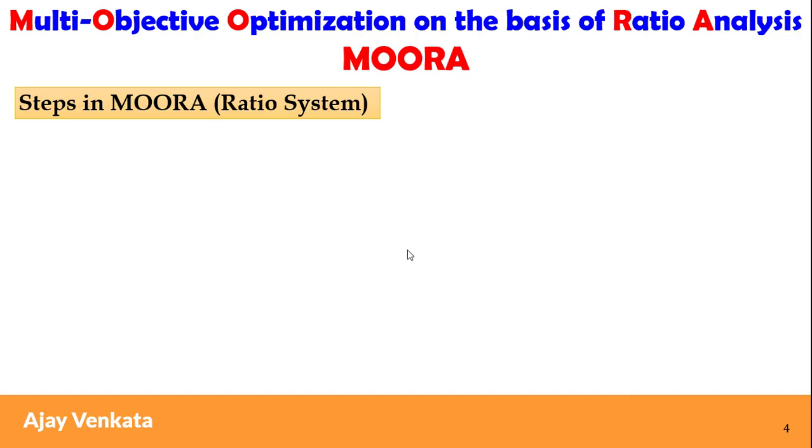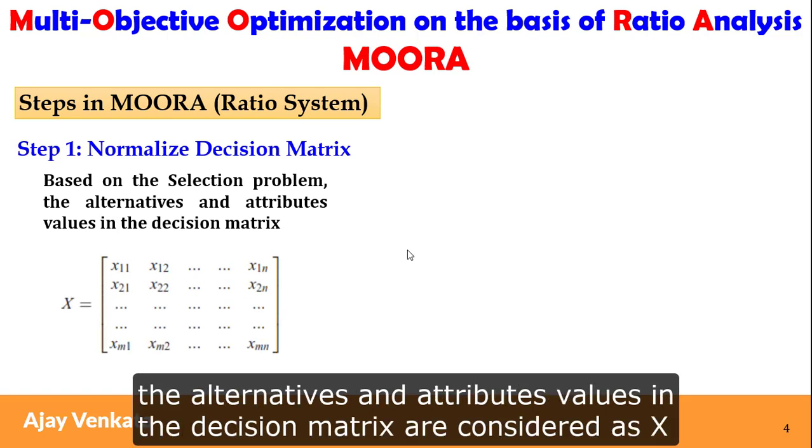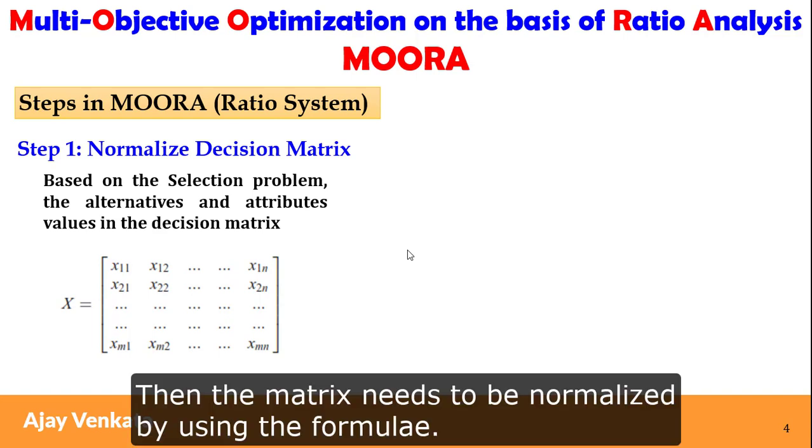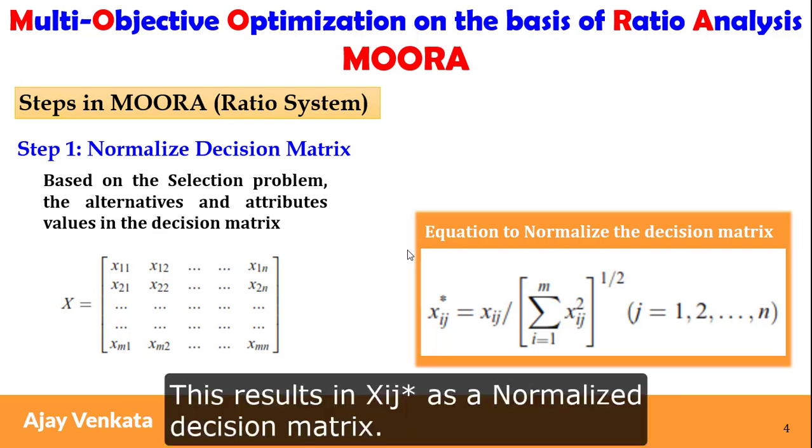Steps in MOORA ratio system: The first step is based on the selection problem. The alternatives and attribute values in the decision matrix are considered as X. Then the matrix needs to be normalized by using the formula. This results in Xij star as a normalized decision matrix.